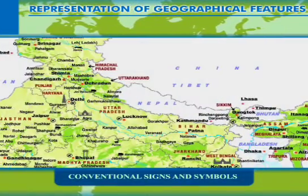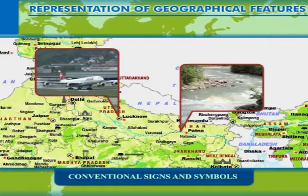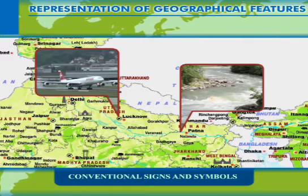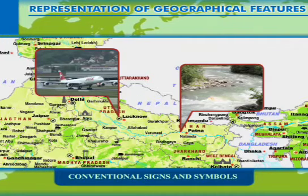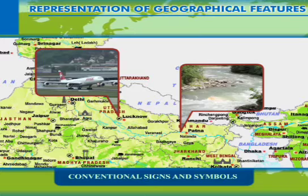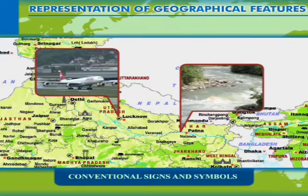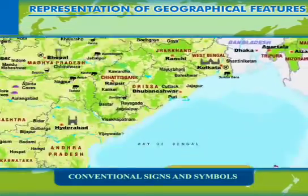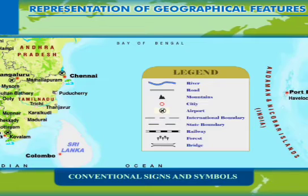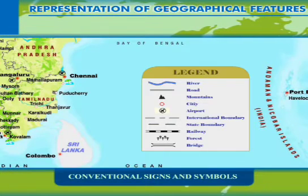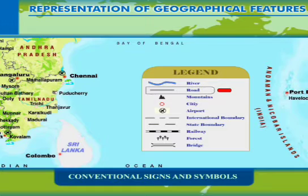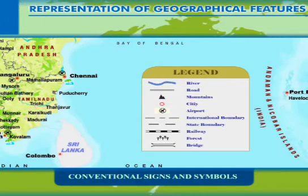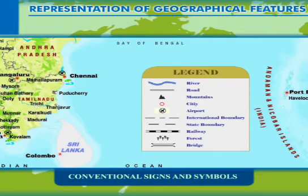The size of the map is much smaller than the actual size of the land it represents. Due to this reduced size, it is not possible to show natural and man-made features in their actual shape and size. Therefore, symbols accepted all over the world are used to represent features like rivers, roads, mountains, cities, etc. on the map. These symbols are known as conventional symbols, and they facilitate the representation of meaningful information on the map.